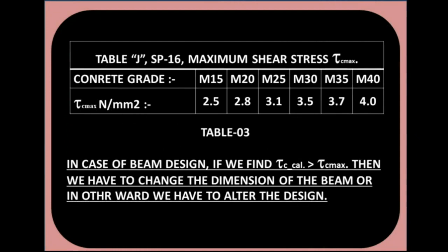The maximum shear strength Tau C max in N/mm² is: for M15 it is 2.5, M20 is 2.8, M25 is 3.1, M30 is 3.5, M35 is 3.7, and M40 is 4.0. In case of beam design, if the calculated Tau C is greater than Tau C max, then we have to change the dimensions of the beam — in other words, we have to alter the design.